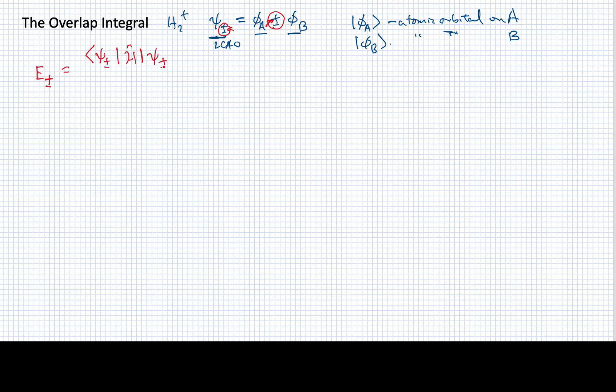So E plus or minus is going to be this expectation value of the wave function plus or minus on the Hamiltonian divided by the overlap of this wave function with itself or the square product of it. We're assuming that this is not necessarily normalized, which is a reasonably good assumption because we're picking this out of two orbitals that are on different atoms. So in fact, what we need to do is evaluate this quantity in order to find out what the normalization condition might be.